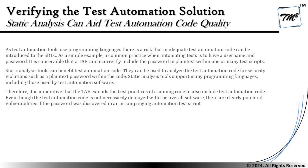It is imperative that test automation engineers extend the best practices of code scanning to include test automation code as well. Even though test automation code is not necessarily deployed with the overall software, there are clearly potential vulnerabilities if a password is discovered in an accompanying automation script. Plain text passwords are a major risk — for example, writing 'admin@123' as plain text versus using an encrypted value is the distinction. Static analysis tools should be used for automation not only to identify anomalies but also to embed secure coding practices when writing automation scripts.